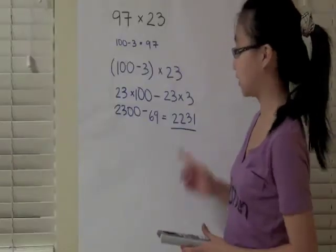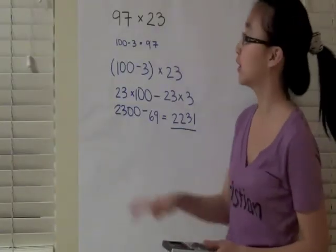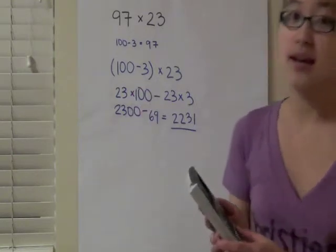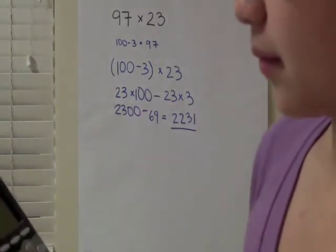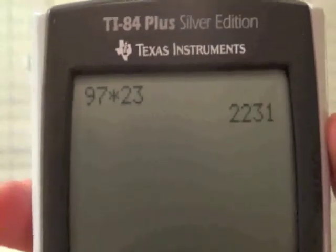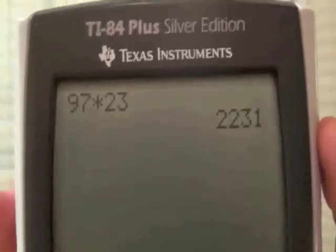So 2,231 was our answer when we used the distributive property. Now, if you look at my calculator, when you do 97 times 23, you also get 2,231.